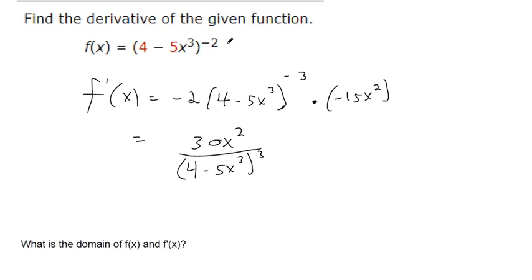They also want to know the domain of f(x). It's written with a negative exponent but that's the same as one over (4 - 5x³)² in the denominator. The domain are all the values where we wouldn't have a divide by zero problem or a square root of a negative.